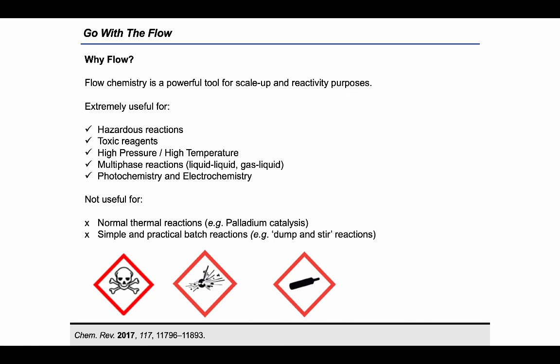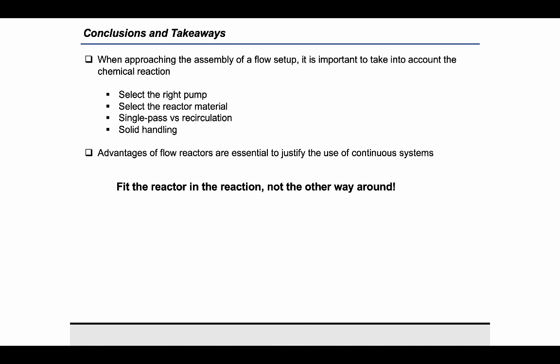In conclusion, I hope this presentation could explain the fundamentals behind flow chemistry and what are the most important decisions that will facilitate the translation of a designated process from batch to flow. For example, the selection of the right reagent delivery system, reactor material, or a single-pass versus recirculation design—a routine decision crucial for the success of a flow protocol.